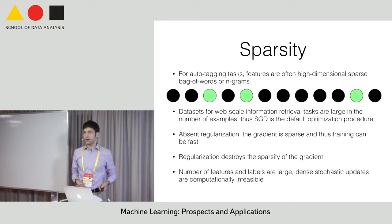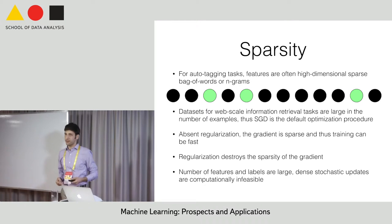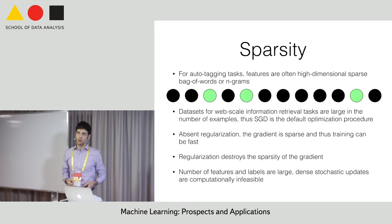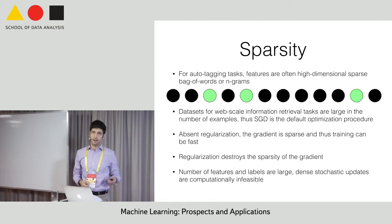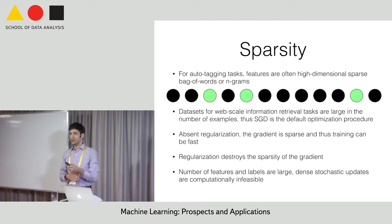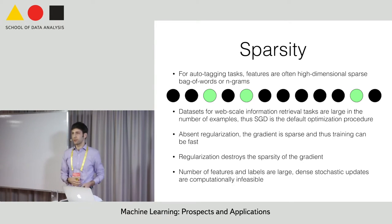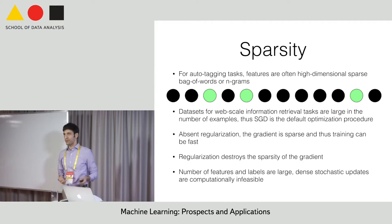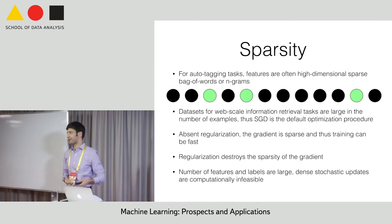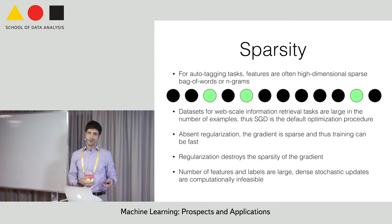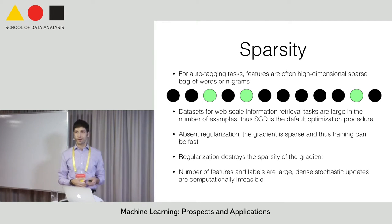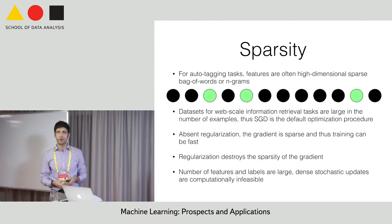When we're talking about auto-tagging tasks, like working with web data or, in my case, tagging documents in the biomedical literature, every document might contain 200 words, but they might be from a very large vocabulary. When I was working with medical data, you have every name of every gene, every name of every disease, every name of every protein. These are all important vocabulary words that you don't want to throw away.